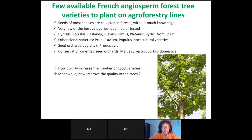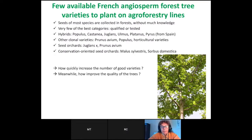The problem is there are few available French angiosperm forestry varieties to plant on agroforestry lines. Seeds of most species are collected in forests without much knowledge about them — very few are of the best categories. We have hybrids in Populus, Castanea, Juglans, Ulmus, and Platanus. Some clonal species without hybrids exist in Prunus avium, and it's possible to use horticultural varieties. For seed orchards we have only Juglans and Prunus avium.